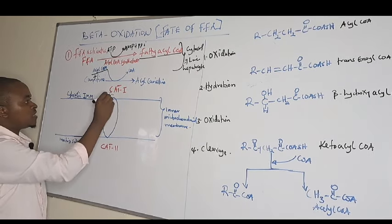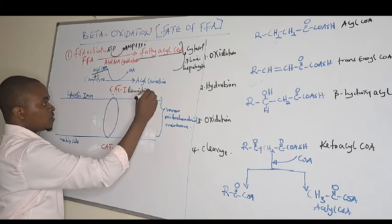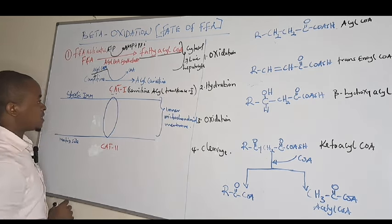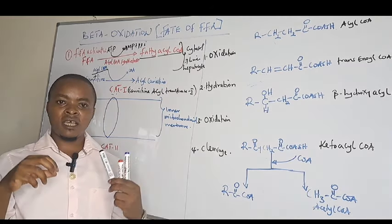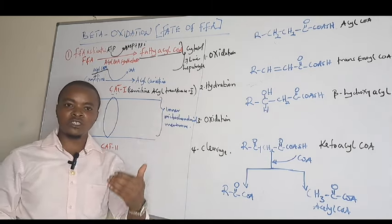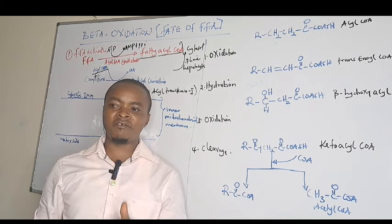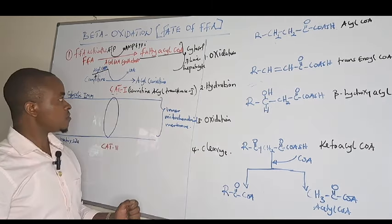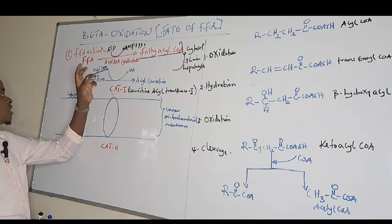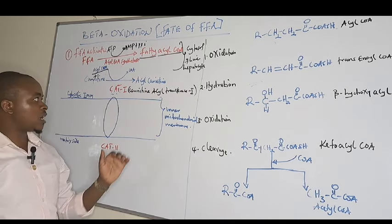CAT1 stands for carnitine-acyltransferase type 1. Whenever we have carnitine-acyltransferase type 1, it combines acyl-CoA together with carnitine to form acyl-carnitine, and the CoA is cleaved off. That is how we form acyl-carnitine.